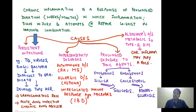The second important cause is hypersensitivity diseases. For example, we have autoimmune diseases such as rheumatoid arthritis and multiple sclerosis. We have certain allergic diseases, for example asthma, and we have certain unregulated immune responses against microbes, for example inflammatory bowel disease. So all these hypersensitivity diseases are also important causes of chronic inflammation.